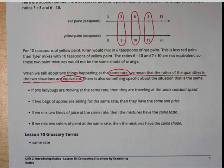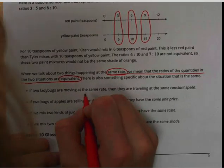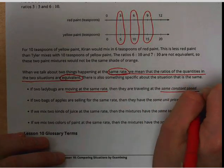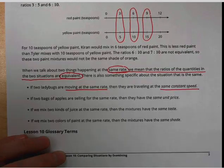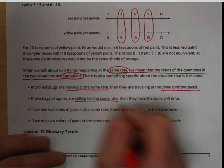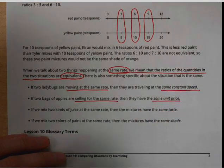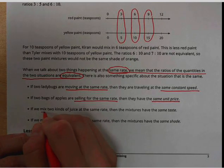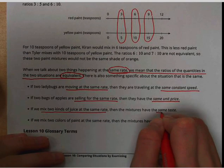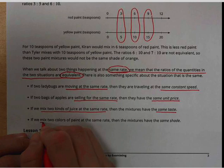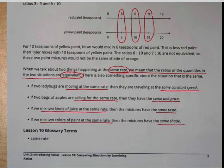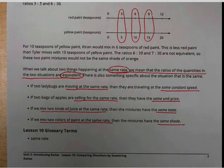For example, if two ladybugs are moving at the same rate, they have the same constant speed. If they are selling for the same rate, they have the same unit price. If we mix two kinds of juice at the same rate, then the mixtures have the same taste. If we mix two colors of paint at the same rate, then the mixtures have the same shade. So those are some important vocabulary words that you might see on your homework and upcoming on tests and quizzes.